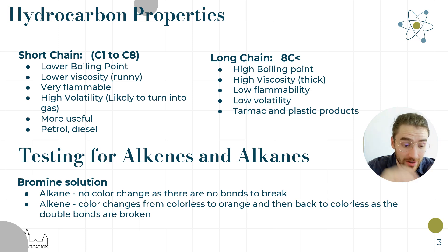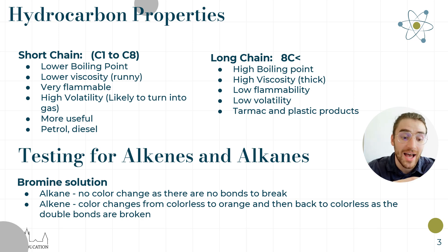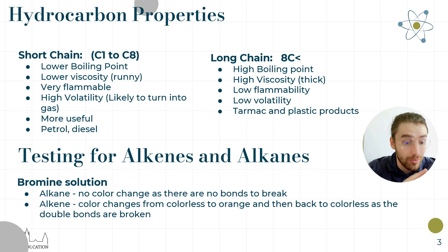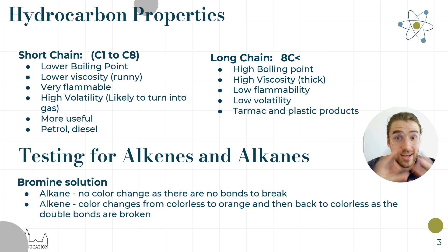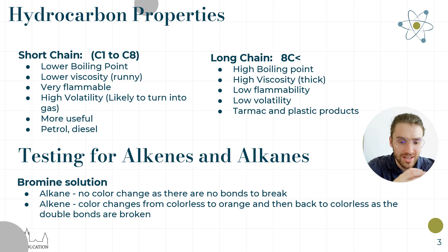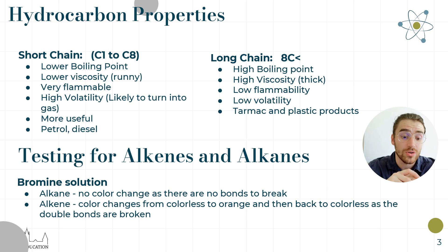The more reactive something is, the more flammable it's going to be, so shorter-chain hydrocarbons are very flammable and highly volatile — propane is a gas, for example. There are more uses for short-chain hydrocarbons as fuels, and also as disinfectants. They have a low boiling point, evaporate quickly, and have low viscosity. Longer-chain hydrocarbons are the opposite: high boiling point, high viscosity, low flammability, low volatility, and can be used to make tar and plastics.